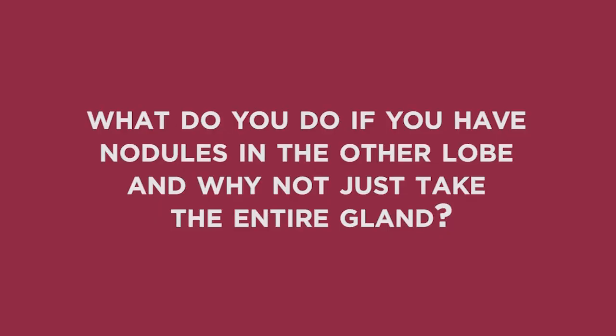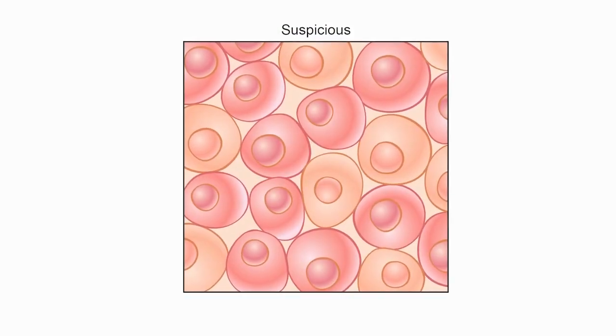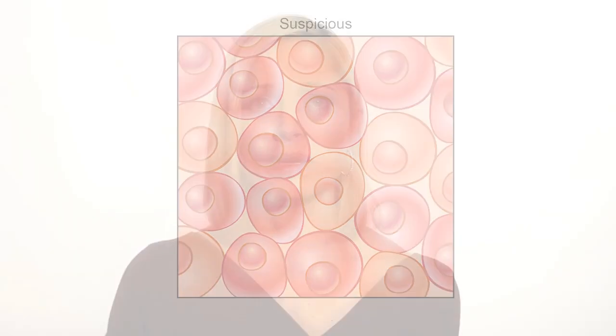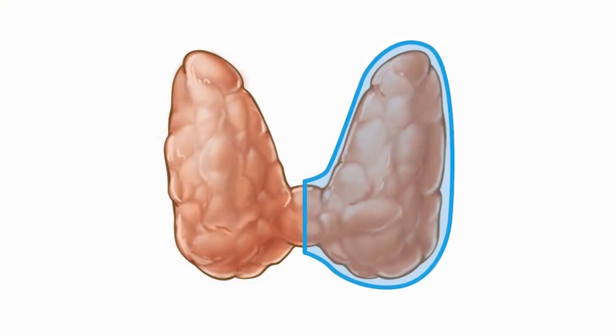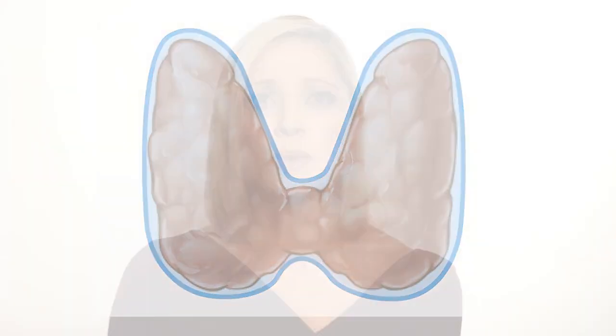If there are nodules in the opposite lobe and they are suspicious based on ultrasound criteria, or if they are greater than one centimeter in size, then they should be biopsied. If that biopsy shows suspicious findings, then a total thyroidectomy may be required. There is no way to determine if these nodules will grow. Some patients choose to have both lobes removed to eliminate uncertainty as well as the need for continued monitoring of that nodule.